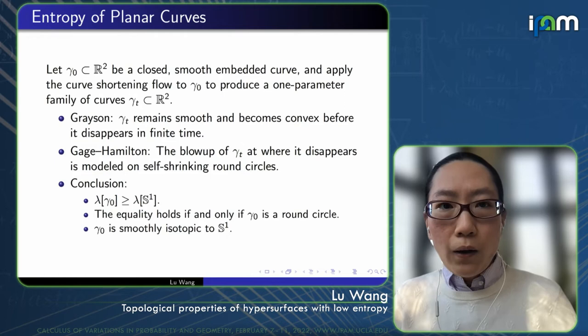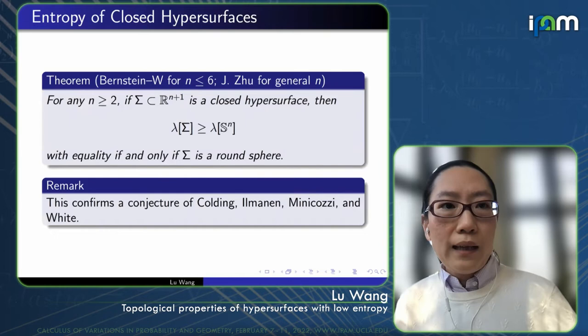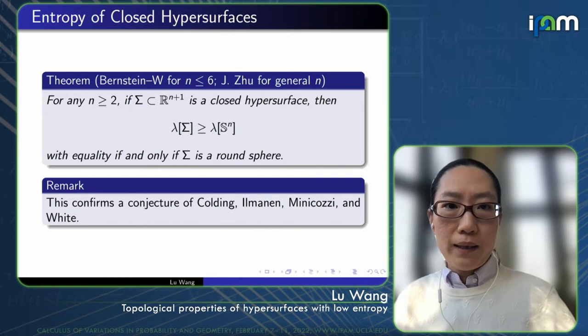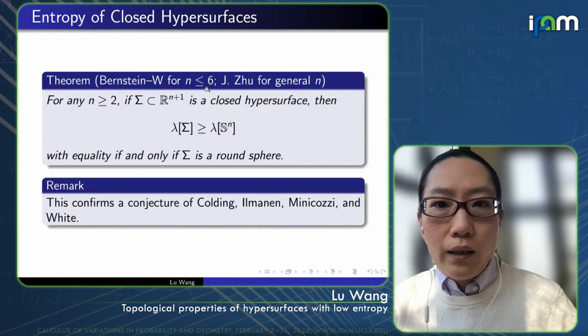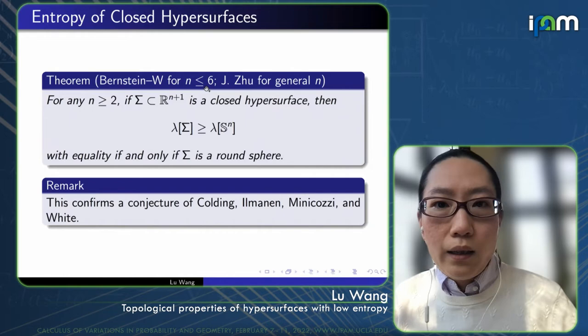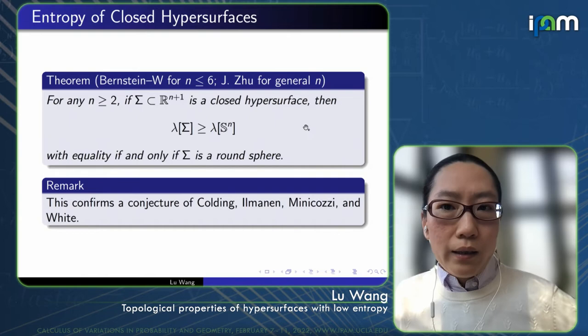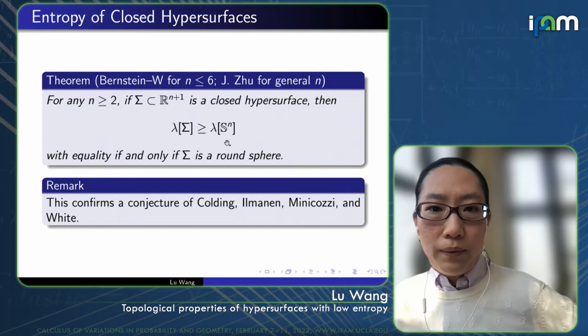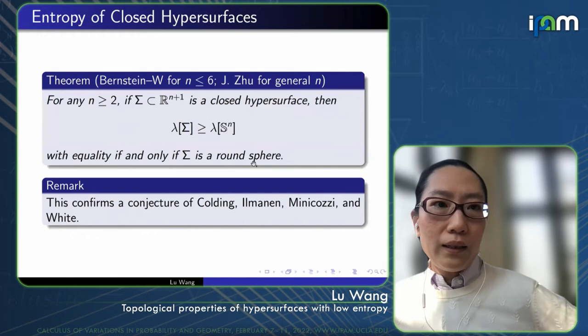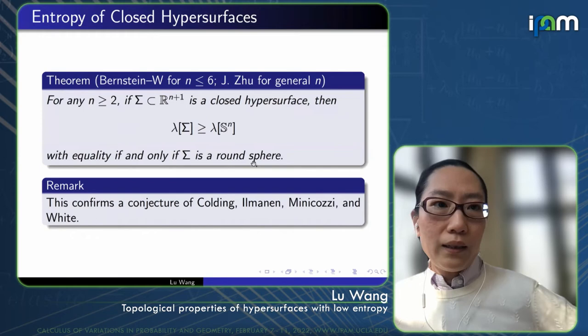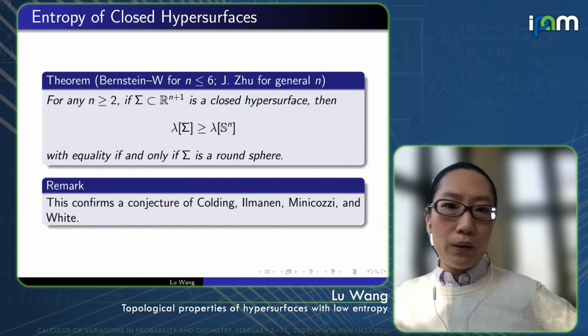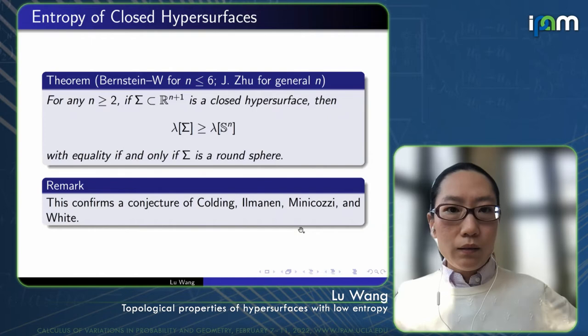Nonetheless, one can still use the flow to prove a sharp lower bound for the entropy of closed hypersurfaces in general dimension. This is a theorem of Jacob and myself for n ≤ 6, and later extended to all dimensions by Jonathan Zhu. The theorem says that for any n ≥ 2, if you consider any closed hypersurface in Euclidean space, then the entropy is bounded from below by the entropy of the round sphere, with equality if and only if Σ is a round sphere. Of course we don't specify the center or radius because entropy is invariant under these motions.